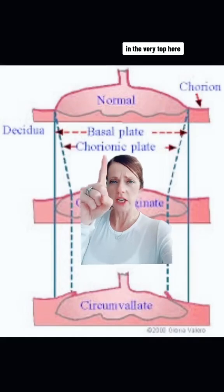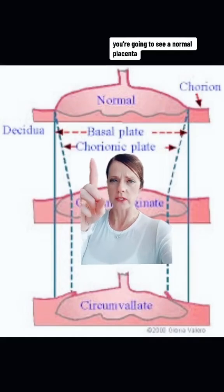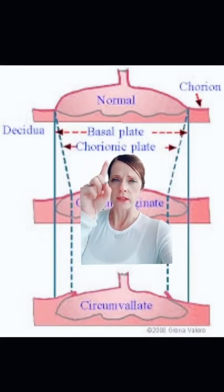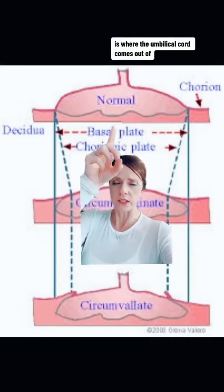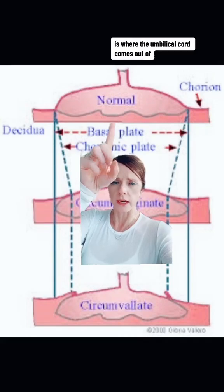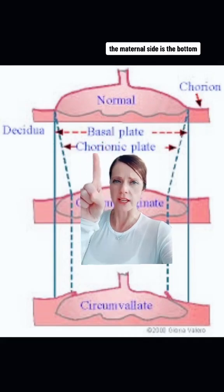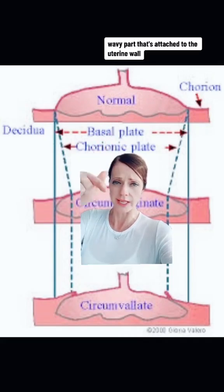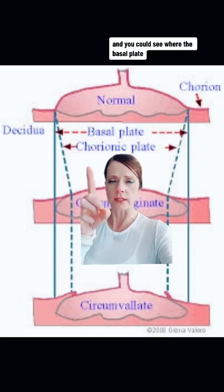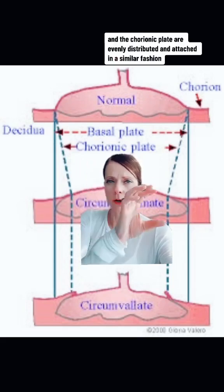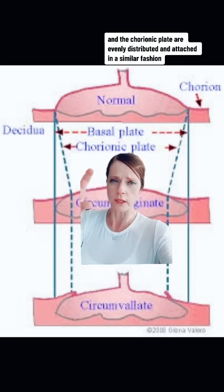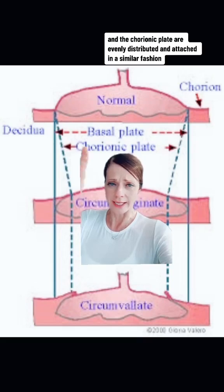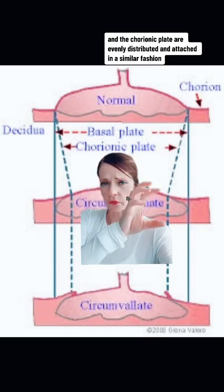At the top here, you're going to see a normal placenta. The fetal side is where the umbilical cord comes out of. The maternal side is the bottom wavy part that's attached to the uterine wall. You can see where the basal plate and the chorionic plate are evenly distributed and attached in a similar fashion.